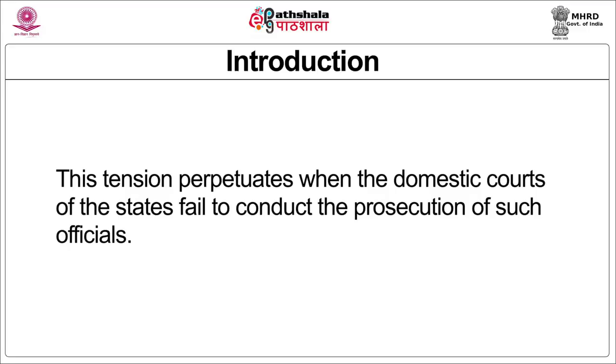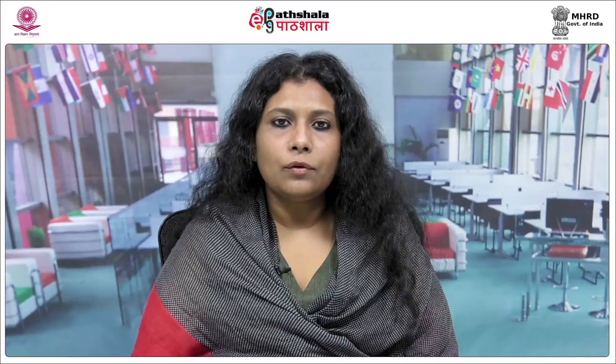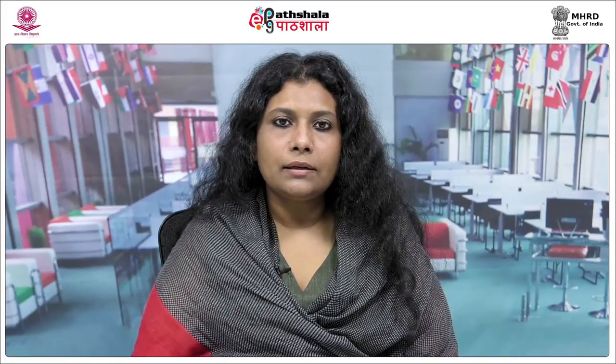This tension perpetuates when the domestic courts of one state fail to conduct the prosecution of such officials under the maxim aut dedere aut judicare — that is, to extradite or to prosecute — an obligation under customary international law. The possibility of prosecution of state officials can occur in two manners: firstly, that state officials are prosecuted in the domestic courts of a foreign jurisdiction; and secondly, that prosecution be held by an international tribunal or court. For prosecutions under the jurisdiction of a foreign state, there has been an upsurge in contemporary times largely because of the advent and adoption of the doctrine of universal jurisdiction over certain crimes.